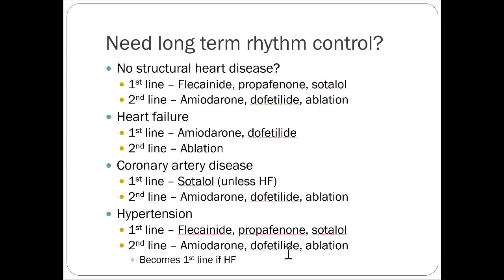When choosing between amiodarone and dofetilide as a class 3 agent, a useful clinical heuristic is: for an older patient in their 70s or 80s, amiodarone is a good choice because it's very effective and the chronic side effects take years to develop — by the time they pass away, they likely won't experience the long-term toxicities. For a younger patient in their 40s or 50s, amiodarone is a bad choice because by the time they reach their 60s, 70s, and 80s, they'll be dealing with significant side effects. Dofetilide is probably the better option for those younger patients.